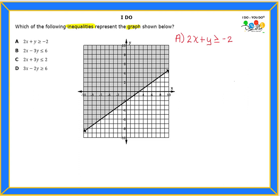Just keep an eye on the inequality symbol because it might change depending on the steps we take. To leave y by itself, I need to move the 2x term. I'm going to subtract 2x on both sides — whatever you do to one side, do it to the other. The 2x's cancel, and I end up with y greater than or equal to, bringing the x to the front: y ≥ -2x - 2.